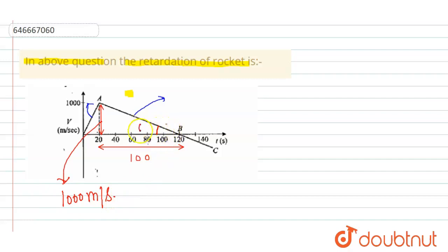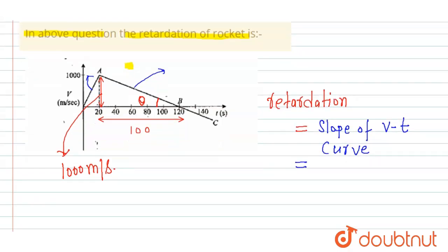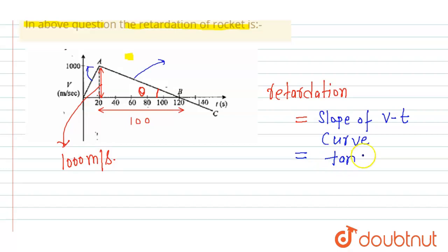So let's suppose this angle is theta. So I can write retardation is equal to slope of v-t curve, is equal to tan theta. Since we have already written here retardation,